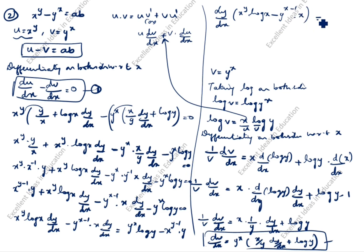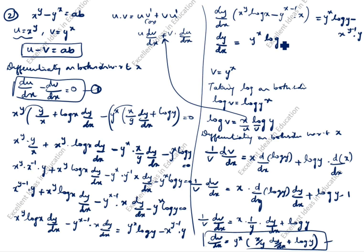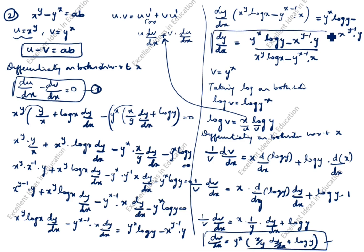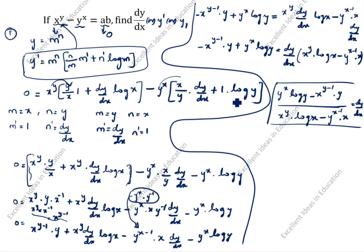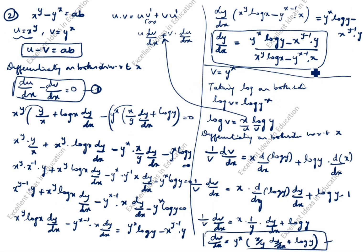Keeping dy by dx terms on one side: dy by dx times (x power y times log x minus y power (x minus 1) times x) equals y power x times log y minus x power (y minus 1) times y. So dy by dx equals (y power x times log y minus x power (y minus 1) times y) divided by (x power y times log x minus y power (x minus 1) times x). This is the answer.